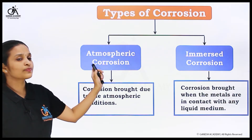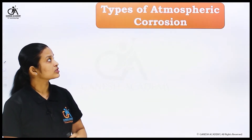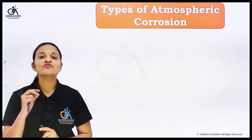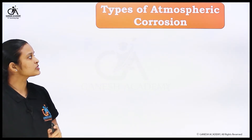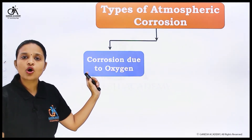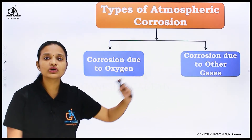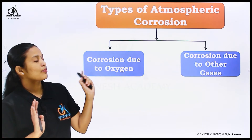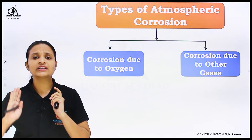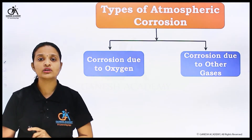Atmospheric corrosion has further subtypes. For convenience, we have divided it into two types: first, corrosion which occurs due to the presence of oxygen, and second, corrosion which occurs due to other gases. So there are two types of atmospheric corrosion: one due to oxygen and another due to other gases.